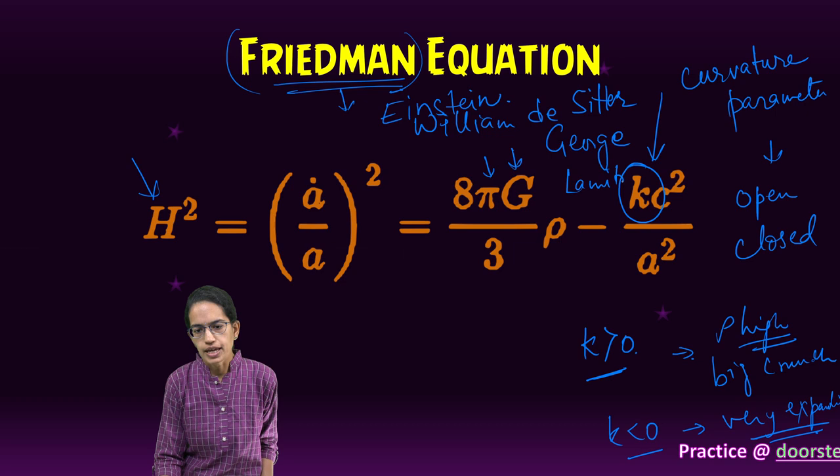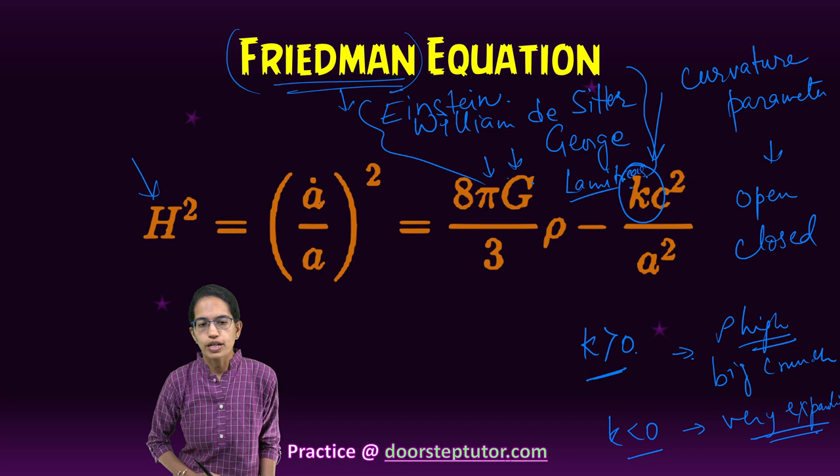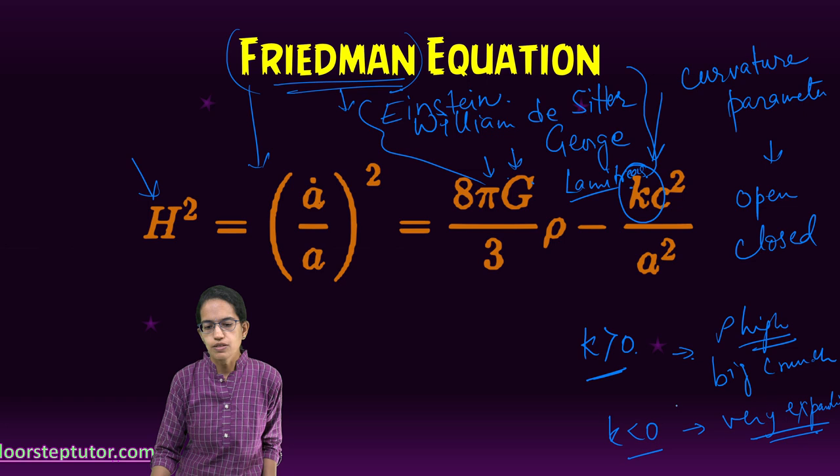Now, these three scientists had been working on the modeling for universe and its study. And Friedman gave this interesting equation where also he said that in certain cases, K could be equal to zero.